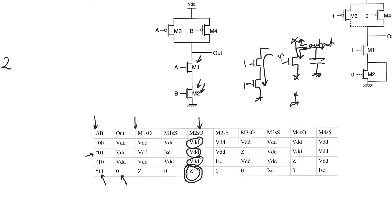Specifically, we first apply any of the other three inputs — 00, 01, or 10 — to ensure the output charges up to VDD, and then we apply the input 11. If the output remains at VDD, we know the output is in a high impedance state and that this fault has occurred. If we see the output going to zero, the circuit is working fine. Discovering a high impedance output requires applying at least two sequential inputs: one to force the output node into a known state, and then the suspect input.